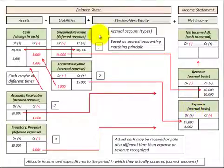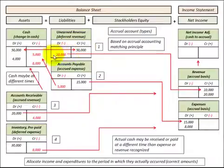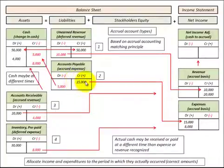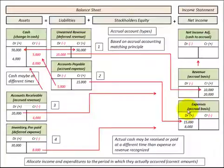Let's look at how these accrual and deferral accounts work. For unearned revenue, this is where we receive a cash payment prior to earning any of the revenue, so once we earn the revenue, we record it as a revenue on our income statement. For accounts payable, this is where we purchase something on credit or incur an expense and then later make payments on it — when we incur that expense, we recognize it as an expense on the income statement.